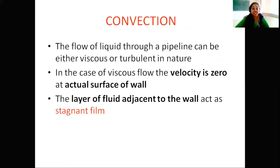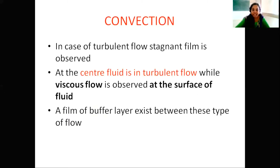Now let's see the heat transfer through a pipeline. The flow of liquid through a pipeline can be either viscous or turbulent in nature. In the case of viscous flow, the velocity of fluid is zero at the actual surface of the wall. The layer of fluid that is adjacent to the wall acts as a stagnant film. This is in the case of viscous flow.